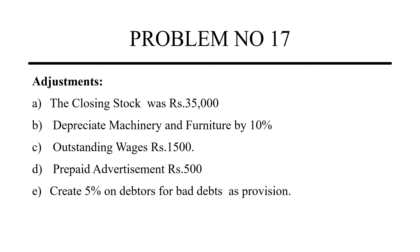Next, depreciate machinery and furniture by 10%. We will reduce the depreciation value from furniture and machinery using 10% on the original value. Outstanding wages go on the liability side of the balance sheet, and wages go in the trading account. Prepaid advertisement is an indirect expense going in the profit and loss account. Create 5% provision on debtors for bad debts — that is 5% on debtors.